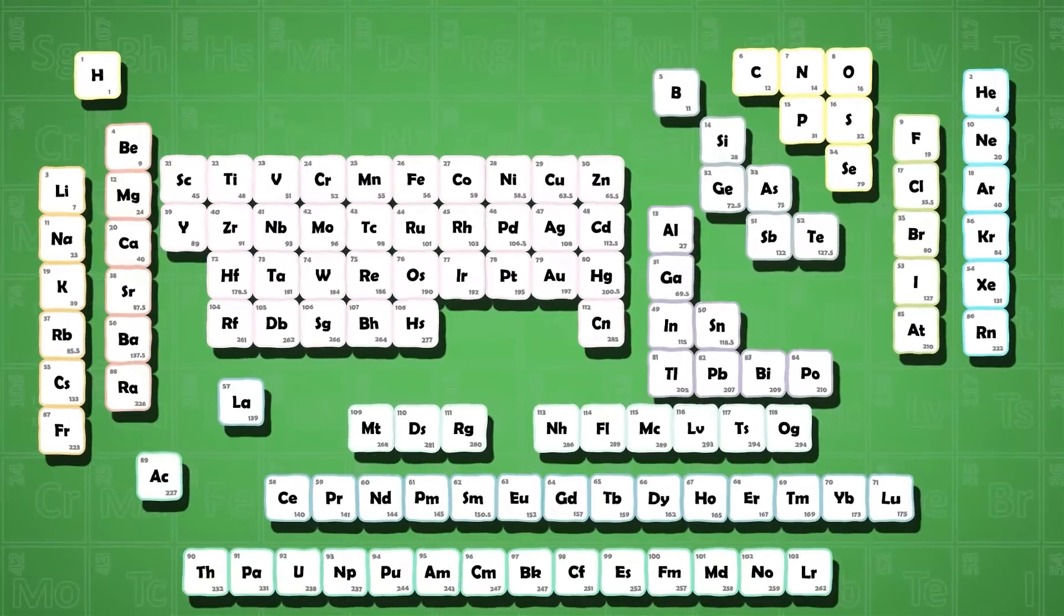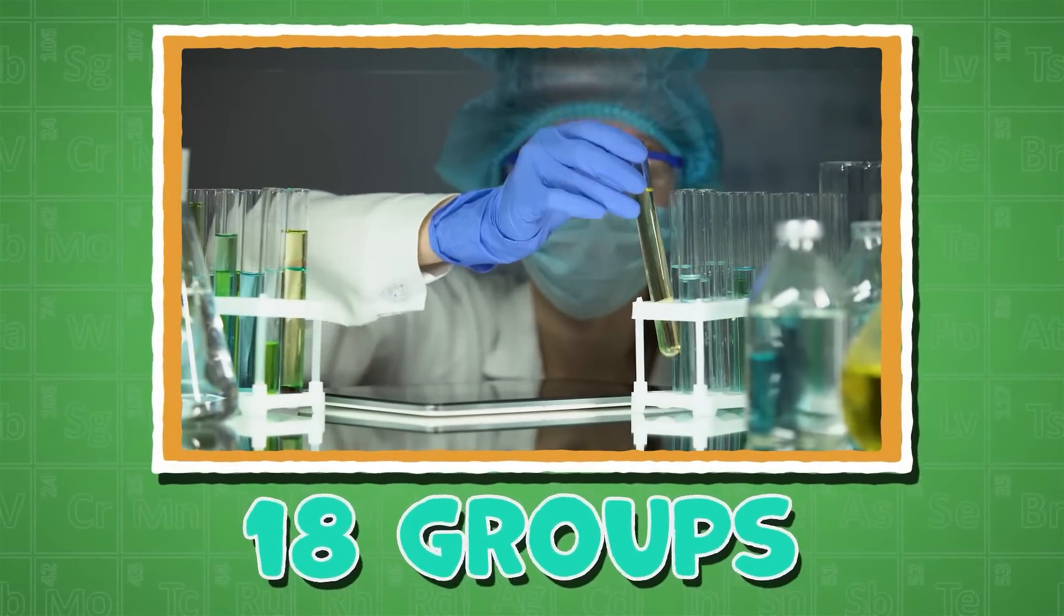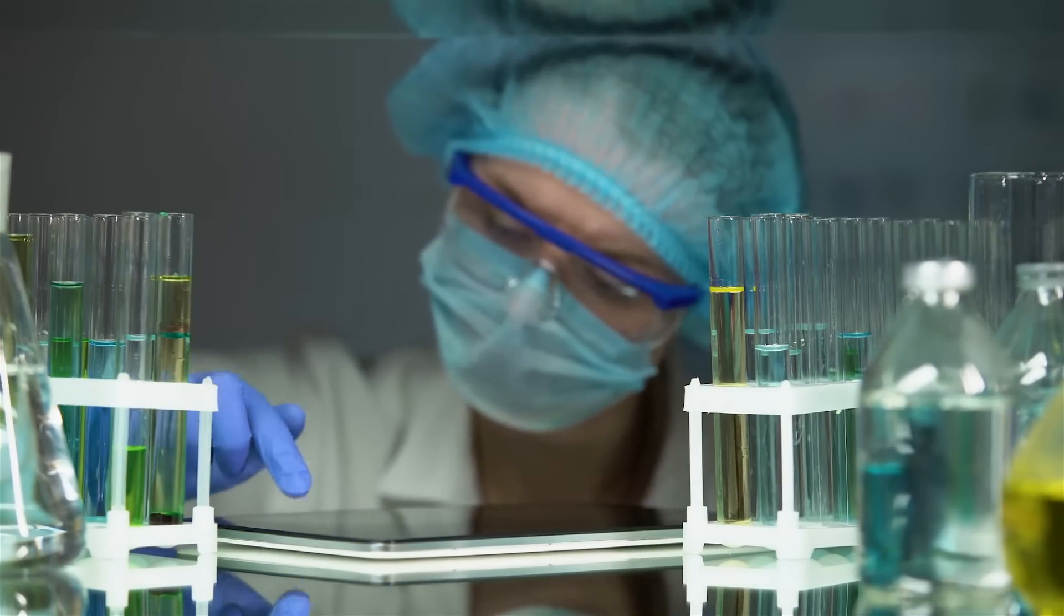Groups are the columns of the periodic table. There are 18 groups in the periodic table and different groups have different properties.